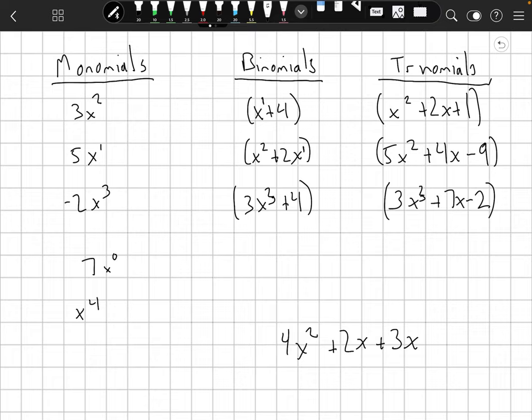Now polynomials can have more than three terms but generally we don't call them anything special after the trinomial. So we just call them a polynomial. Maybe a four term or five term polynomial or something like that. Let's take a look at this polynomial on the bottom here. 4x squared plus 2x plus 3x. Is that a trinomial or a binomial?